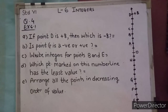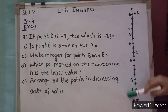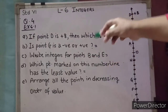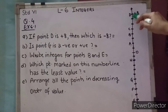Question number 4: The adjacent figure is a vertical number line representing integers. Observe it and locate the following points. If point D is plus 8, we have to find which point is minus 8. On this vertical number line, 0 is in the middle. Numbers above 0 are positive and numbers below 0 are negative.